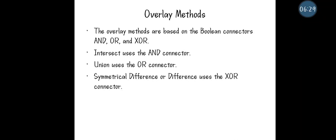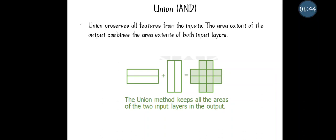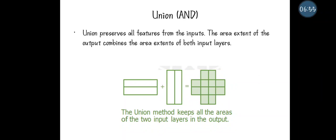There are certain overlay methods represented using Boolean connectors: AND, OR, and XOR. AND is called intersect, OR is called union, and XOR is represented as symmetrical difference. Using the union operation, you combine two input polygon datasets. Union preserves all feature types — all regions covered from input one and all regions from input two are included in the resultant data.